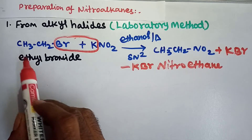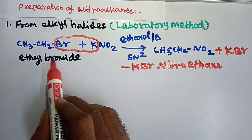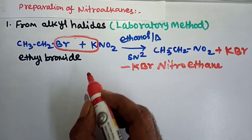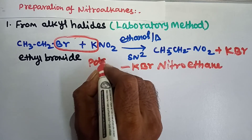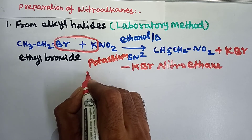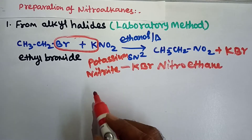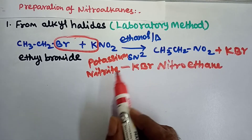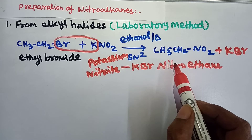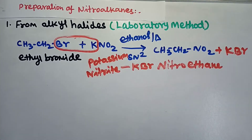This is the first method: preparation of nitroalkanes from alkyl halides in laboratory method. We take alkyl halide — like ethyl bromide or ethyl iodide — and heat it with potassium nitrite. This reaction follows SN2 mechanism and gives nitroethane and potassium bromide.